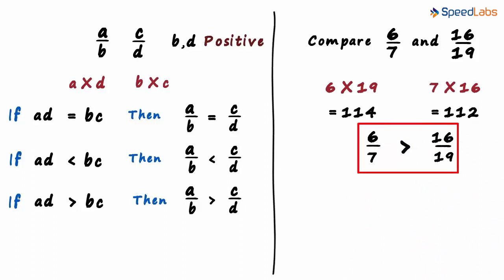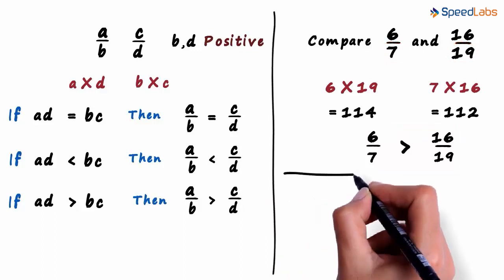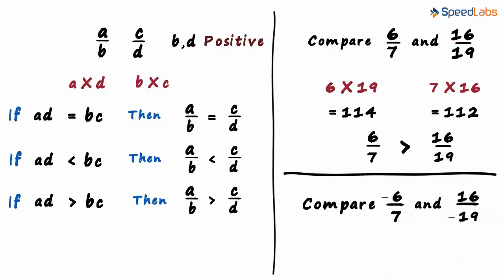That's how simple comparison of rational numbers is. But remember the denominators have to be positive. So what if we were asked a question like this? Compare minus 6 by 7 and 16 by minus 19.